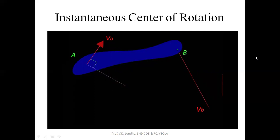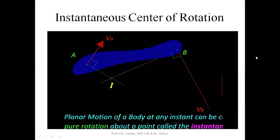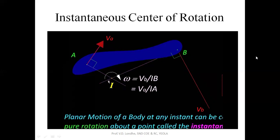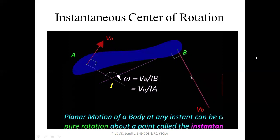Next, we do the same at point B — we drop a perpendicular, and wherever these two perpendiculars intersect, that is the instantaneous center. Once we get the instantaneous center, we can find the angular velocity of the body. In circular motion, velocity is given by r (the distance from the center) multiplied by omega. So knowing the velocity, we can find omega, and once we know the instantaneous center and omega, finding the magnitude and direction of velocity of any other point is easy.